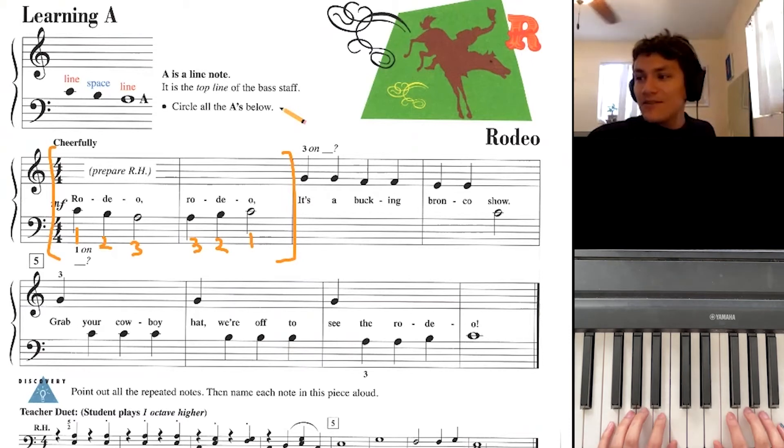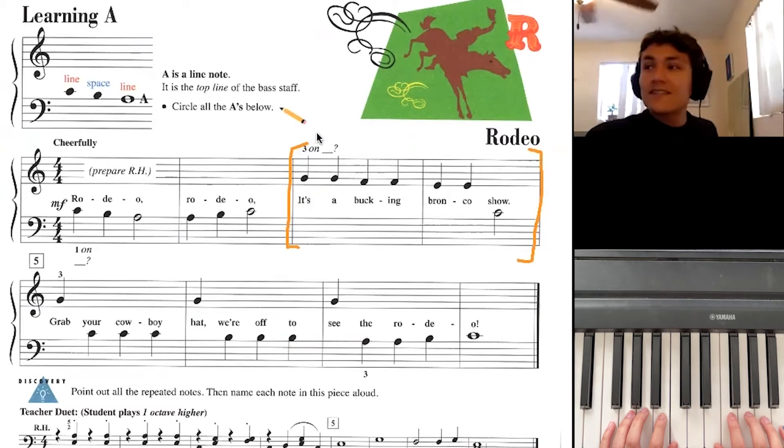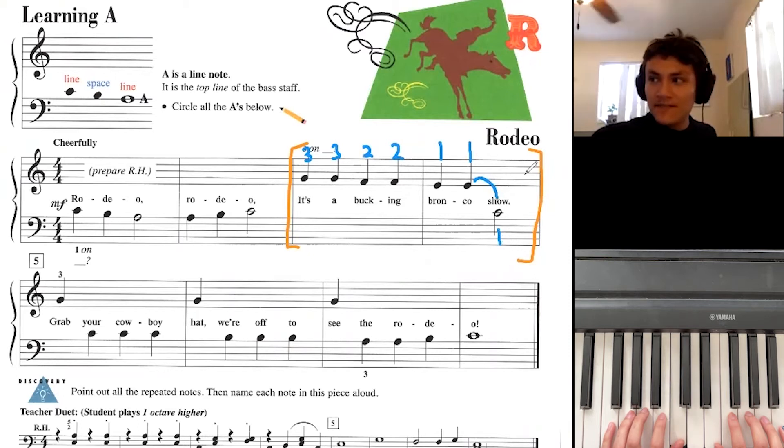In the next two measures, right here, we start with the right hand. We play right hand three, three, two, two, one, one, and then skip to left hand one. One, one, let's play that again.